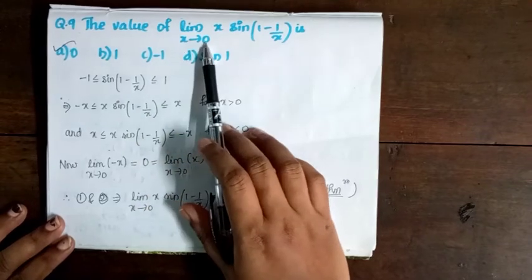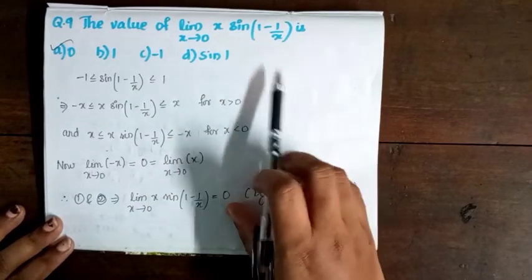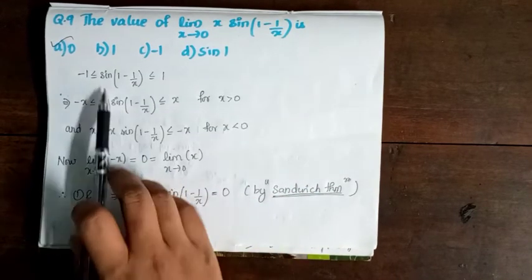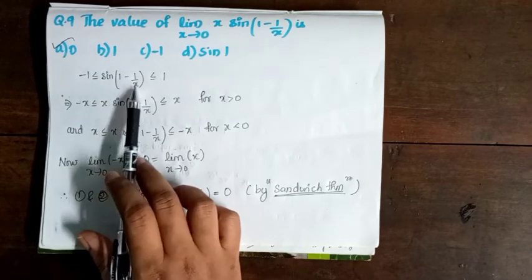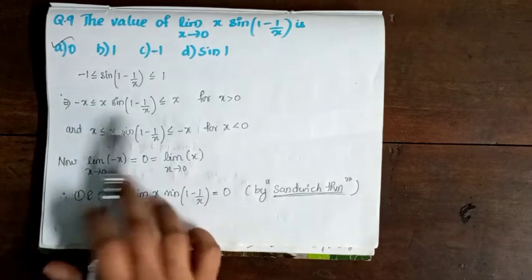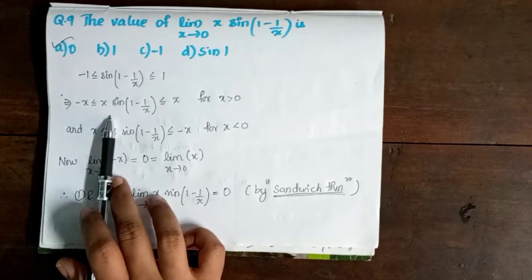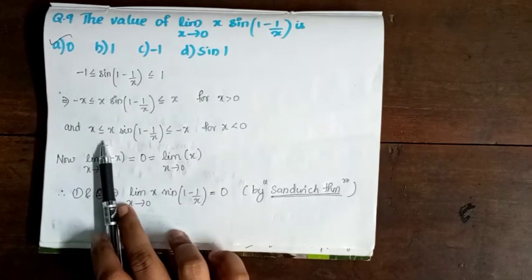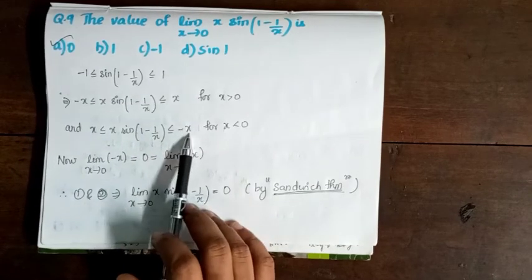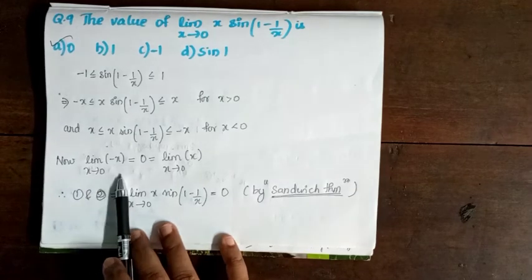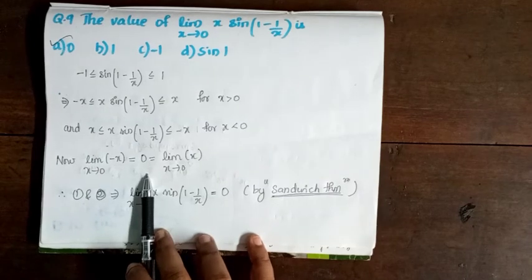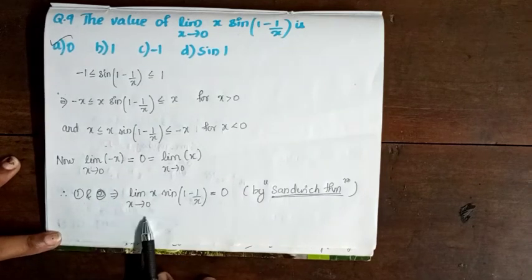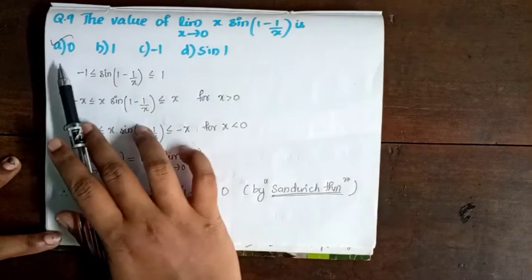Question 9: The value of limit x→0 of x·sin(1/x). Since sin(1/x) is bounded between -1 and 1, we have -x ≤ x·sin(1/x) ≤ x. As x→0, both -x and x tend to 0. By the squeeze theorem, limit x→0 of x·sin(1/x) = 0. Option A is correct.